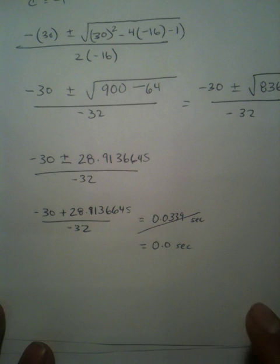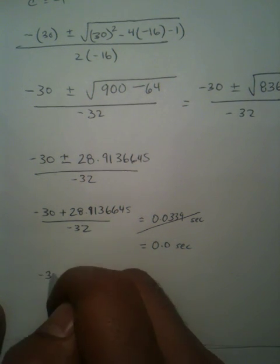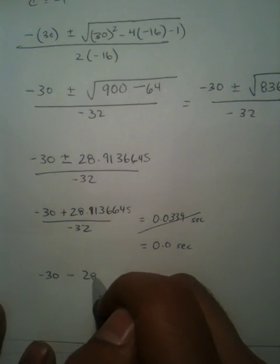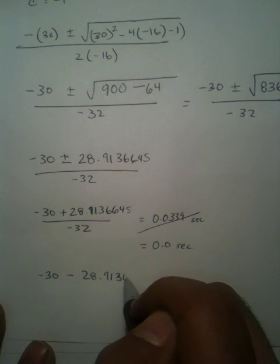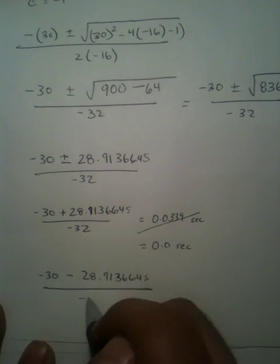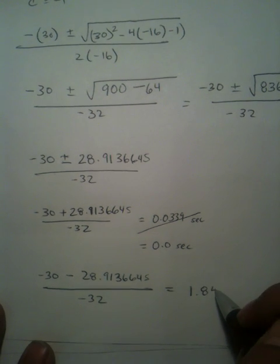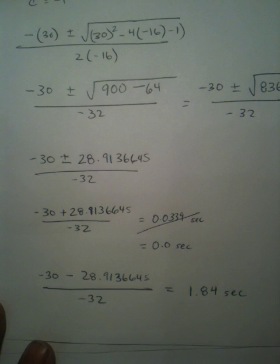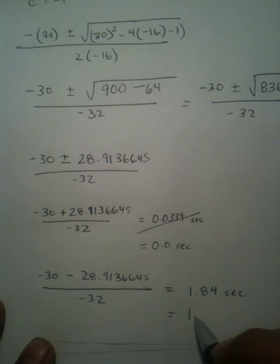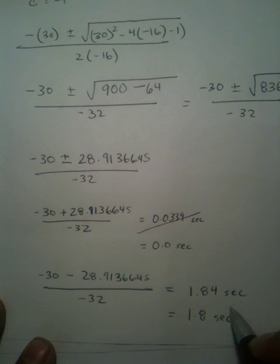Now, you have one last final choice and that is to take negative 30 minus 28.9133645 and divide it by negative 32. And you're going to get 1.84 seconds. This is much more likely of an answer. And since we're rounding to the nearest tenth, you have 1.8 seconds as your answer.